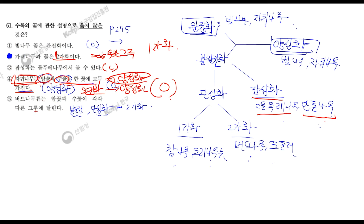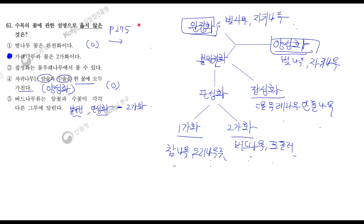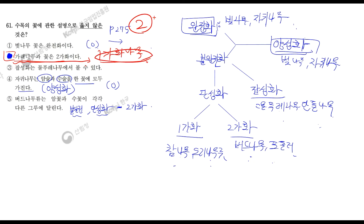버드나무류는 암꽃과 수꽃이 모두 각각 다른 나무에 달린다. 맞는 말이죠? 이가화를 설명하고 있는 겁니다. 이가화의 대표적인 것 버드나무와 포플러가 있었다. 때문에 답은 2번이 되겠습니다. 가래나무 같은 경우는 책에 안 나와 있어요. 이건 직접 찾아보셔야 됩니다. 나머지 지문들을 알고 계시면 2번은 쉽게 풀 수 있었겠죠? 다시 한번, 가래나무는 암수 한 그루이다, 즉 일가화 나무이다. 따라서 답은 2번이 되겠습니다.